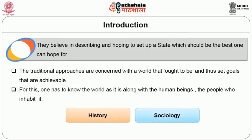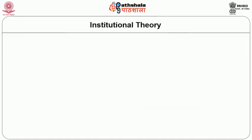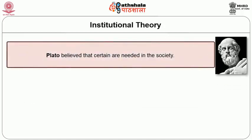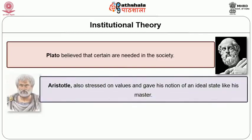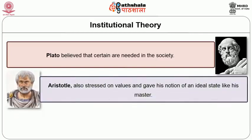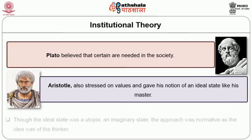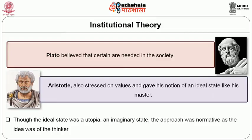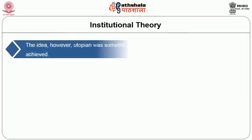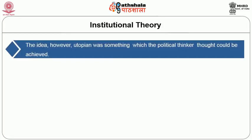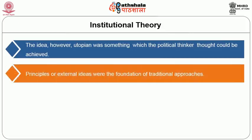The traditional approaches are concerned with the world that ought to be and thus set goals that are achievable. For this one has to know the world as it is along with the human beings who inhabit it. Taking help from history and sociology, they study the various institutions. Plato believed that certain values are needed in society. His disciple Aristotle also stressed on values and gave his notion of an ideal state. Though the ideal state was a utopia — an imaginary state — the approach was normative as the idea was of the thinker, yet it was something which the political thinker thought could be achieved.